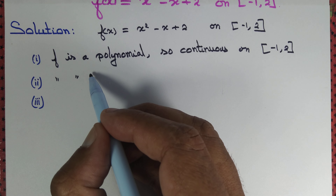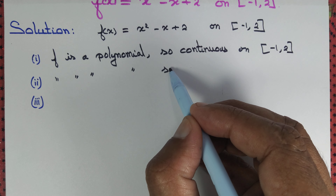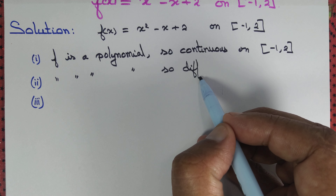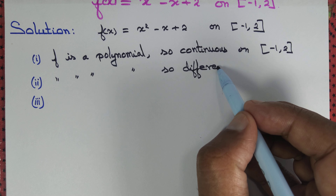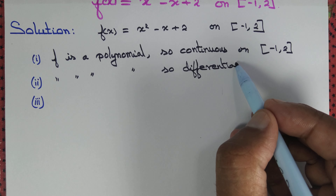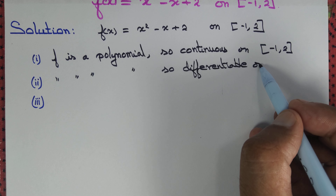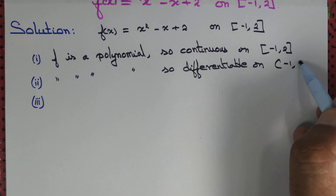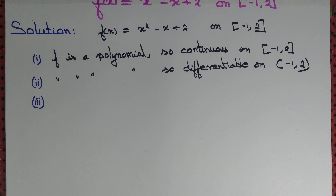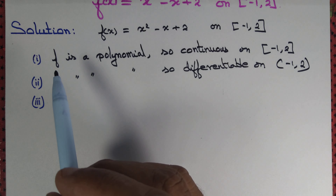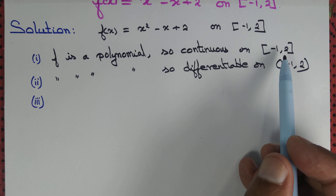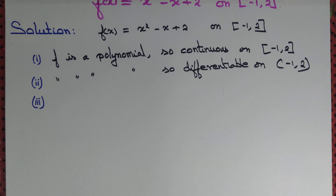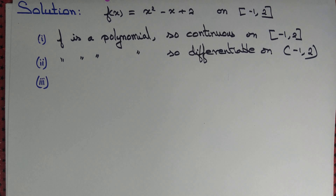Again, f is a polynomial, so f is differentiable on the open interval (-1, 2). Therefore the first criterion — continuity — is satisfied, and the second criterion — differentiability — is also satisfied.